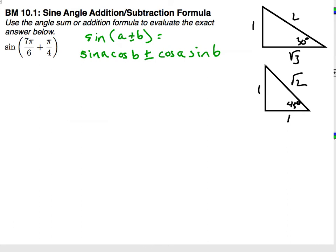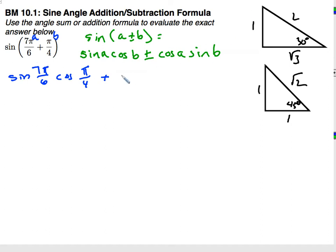So the first thing I'm going to do is plug into my formula. This is going to be a and this is going to be b. So I'll have sine(7π/6)·cosine(π/4) plus, since I'm adding here, cosine(7π/6)·sine(π/4).